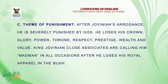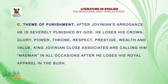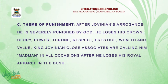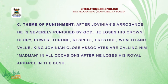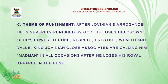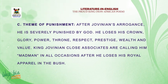Then we have the theme of punishment. After Jovnian's arrogance, he is severely punished by God. He loses his crown, glory, power, esteem, respect, wealth, prestige, and value. All his close associates are calling him a mad person who should not introduce himself as a king. Even the porter at the ranger's house was abusing him. He was beaten by a soldier that he himself recruited — a clear theme of punishment.